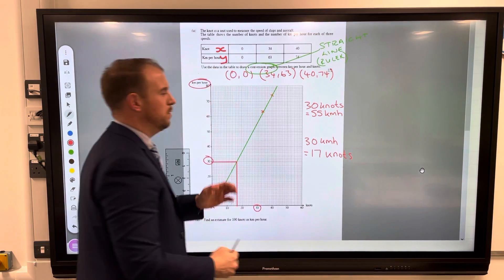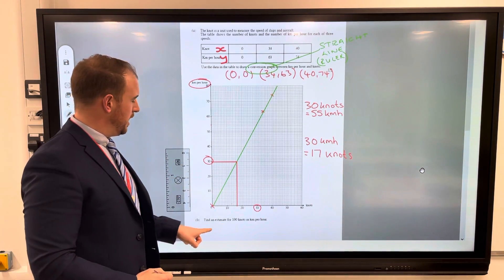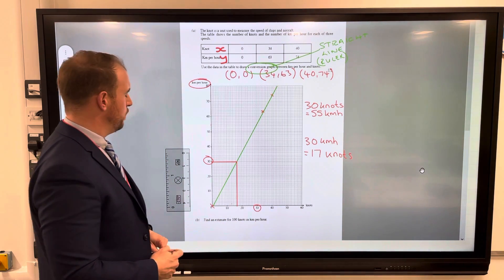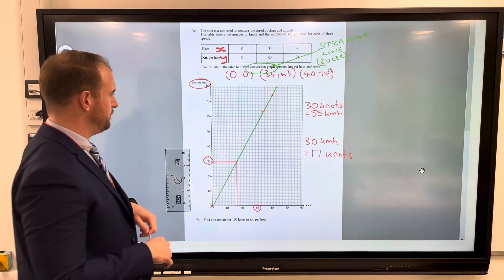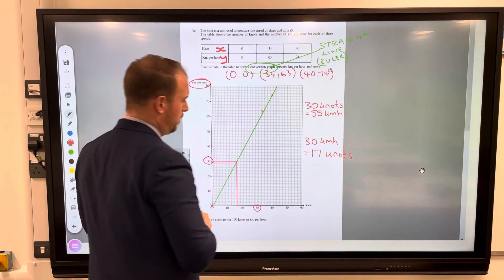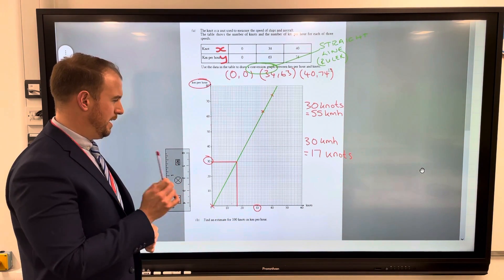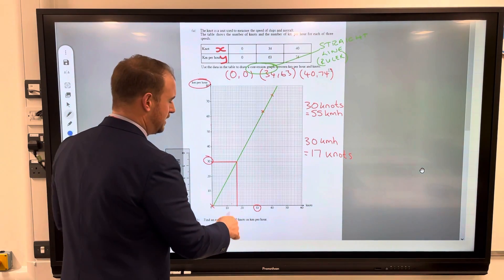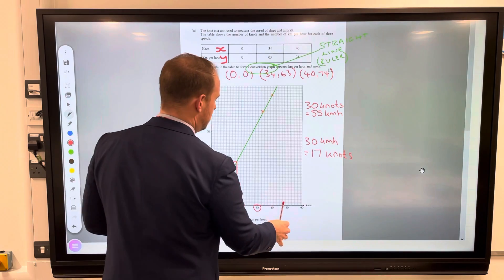It's all about taking that data away from the conversion graph. This question here though I've got find an estimate for 100 knots in kilometers per hour. Well look at all my x-axis, it doesn't go up to 100 knots. However I do have factors of 100 that I could use.